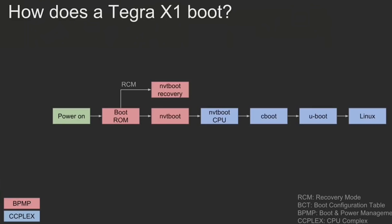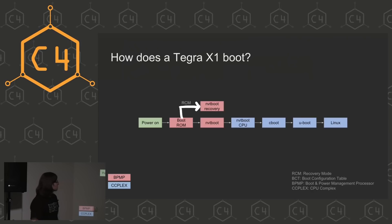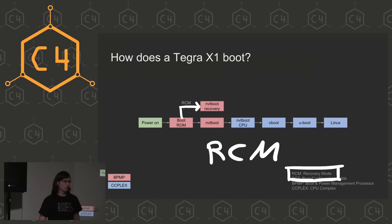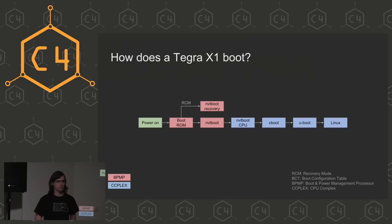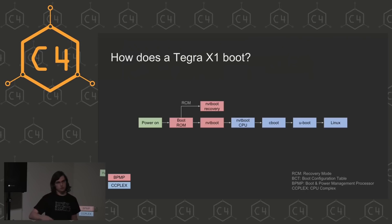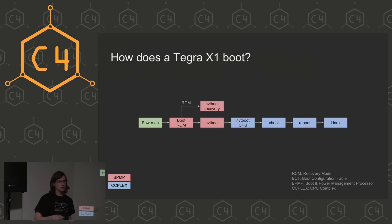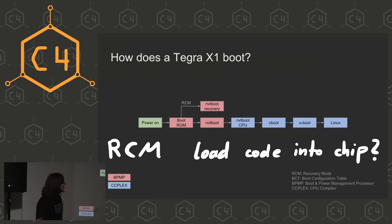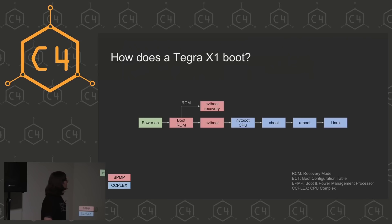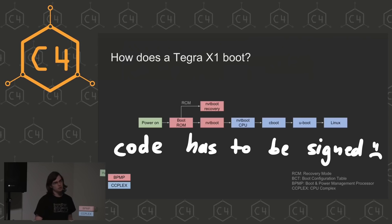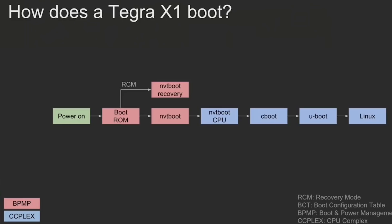Like many devices, if something goes wrong during boot you end up in some kind of recovery mode. This is called RCM — Recovery Mode. If the boot ROM fails to load NVT boot from the eMMC, it goes into the RCM path. You can also force this by pressing some buttons. Then you have a USB device you can use to load code into the chip, usually loading NVT boot recovery which runs from RAM, and you can reflash the eMMC. But we can't just use this because RCM also enforces security — everything you load has to be signed with Nintendo's private key. That would have been too easy.